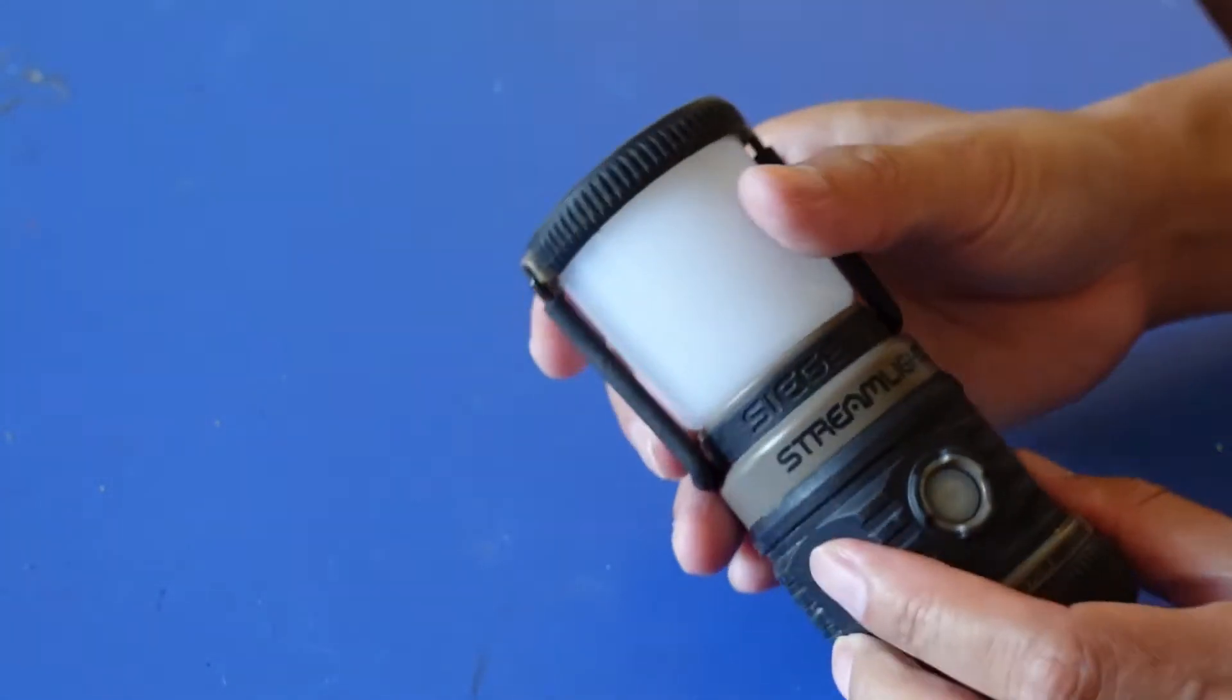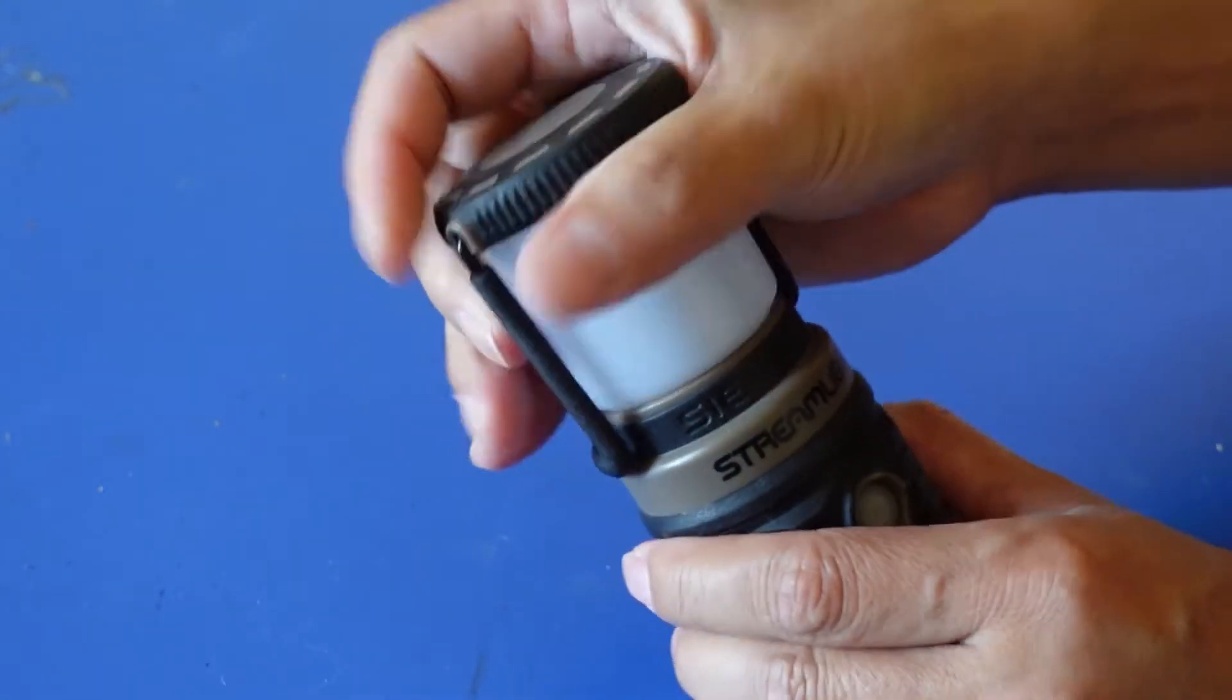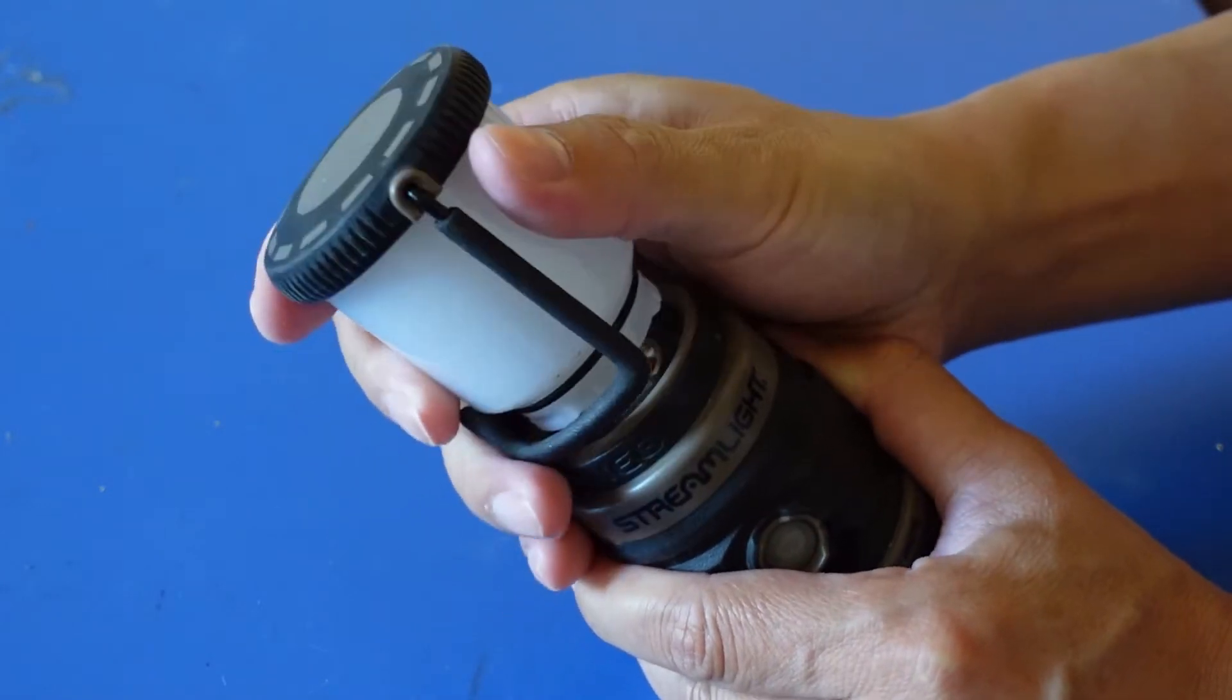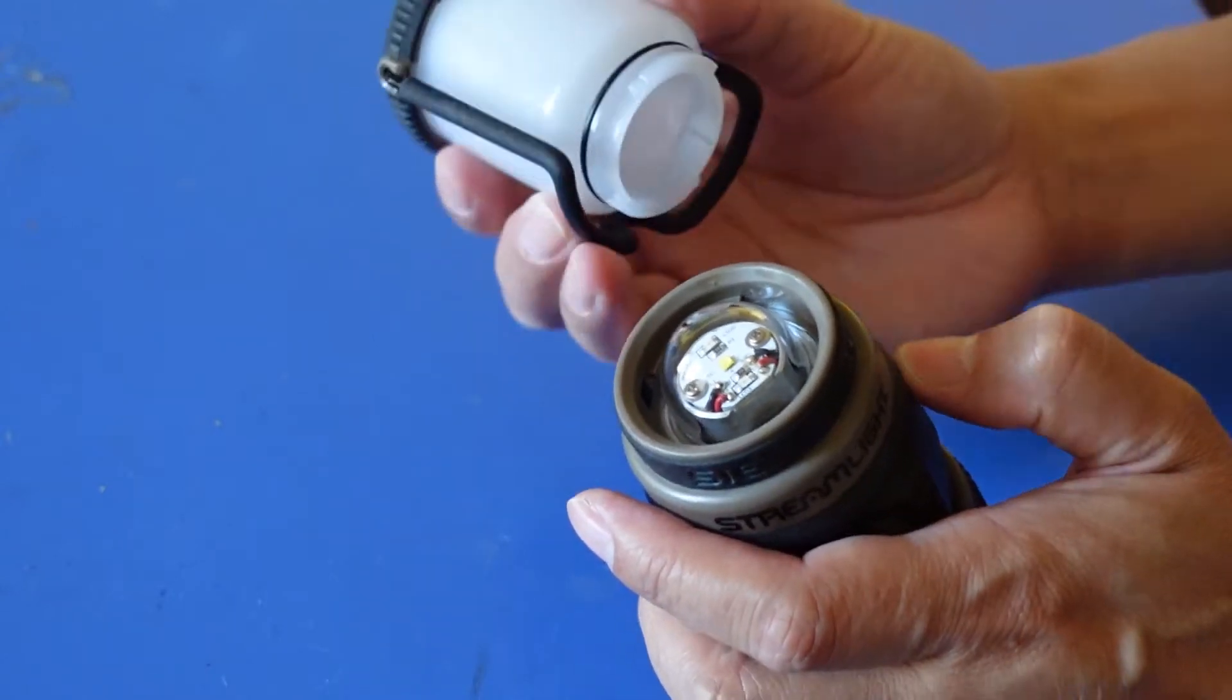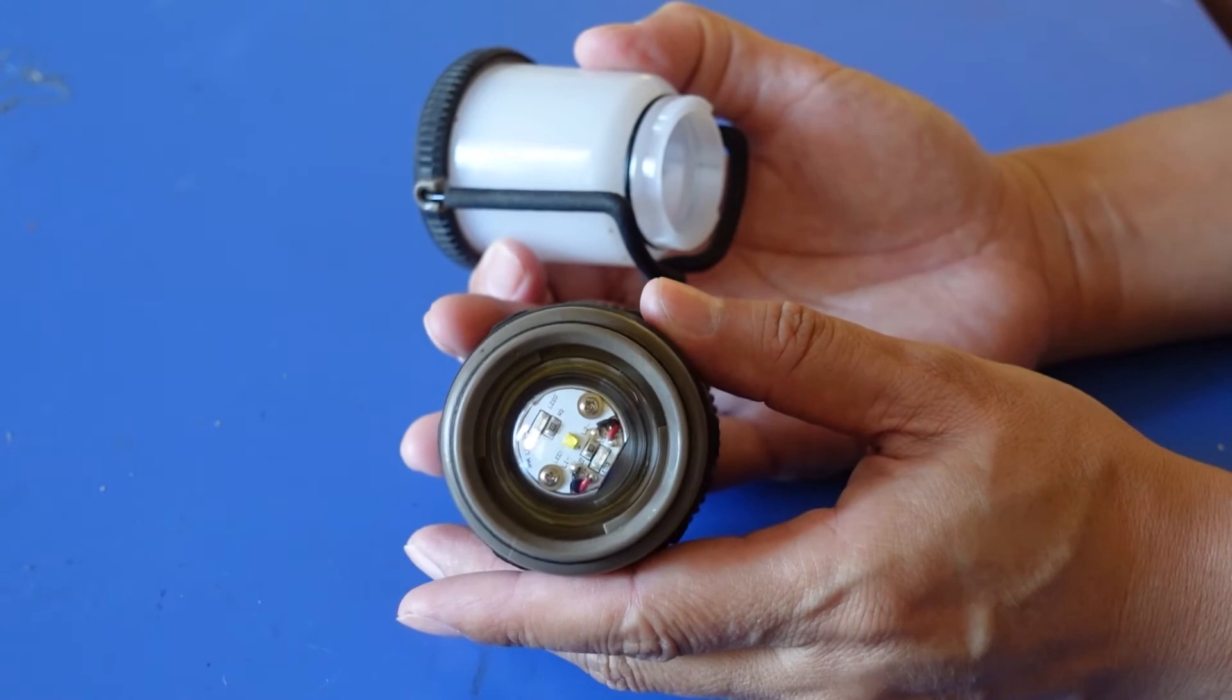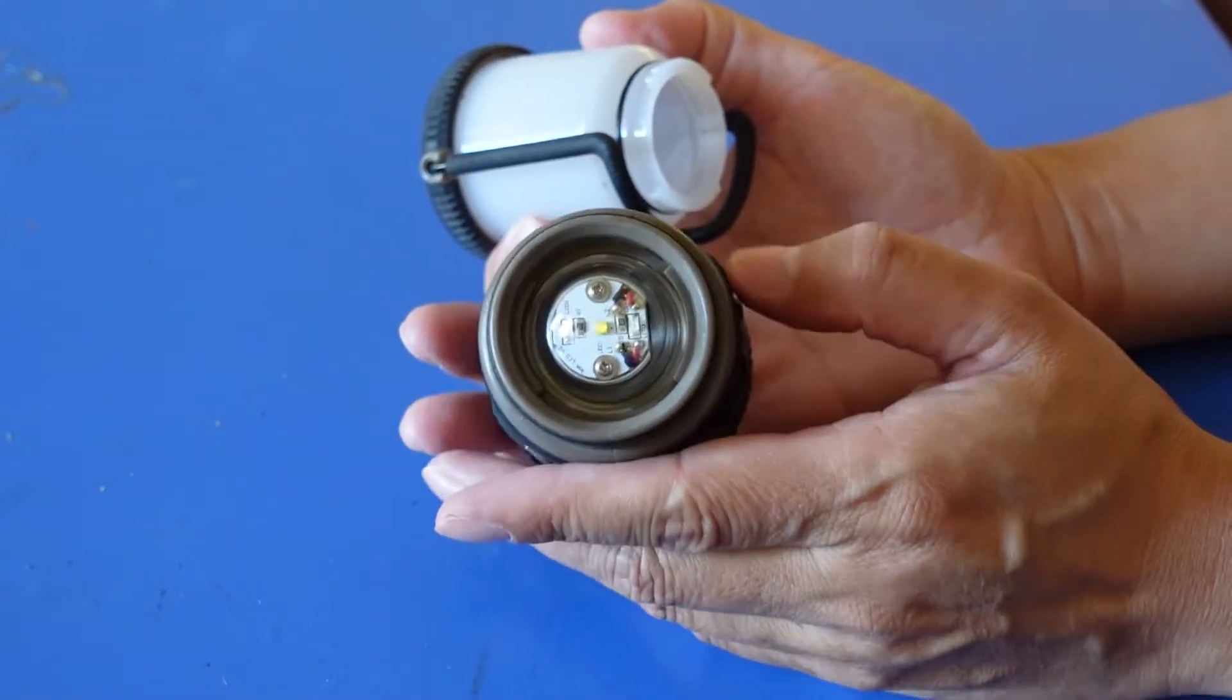That's the top part. You can also take this top off so instead of softened light, you have the light directly. LED exposed, really bright LED light.